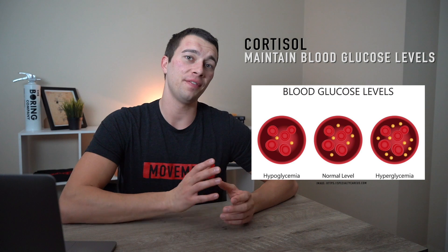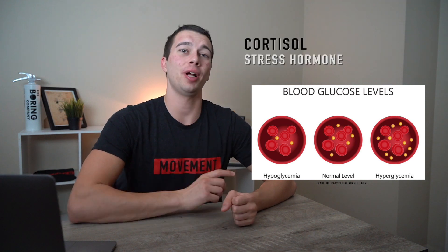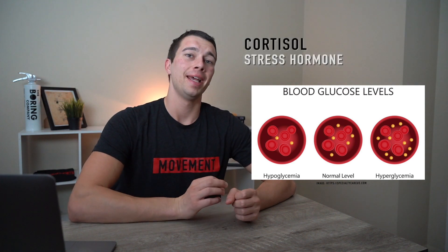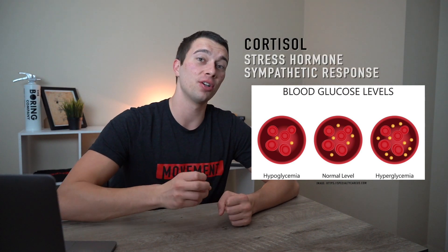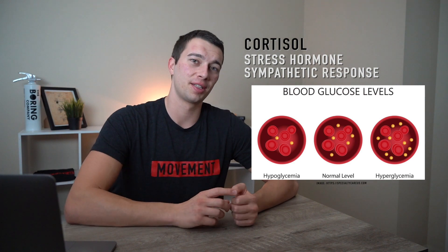Cortisol is often known as a stress hormone and is involved in the sympathetic nervous system, or the fight-or-flight response. Knowing that, let's go ahead and dive into the four functions of cortisol.